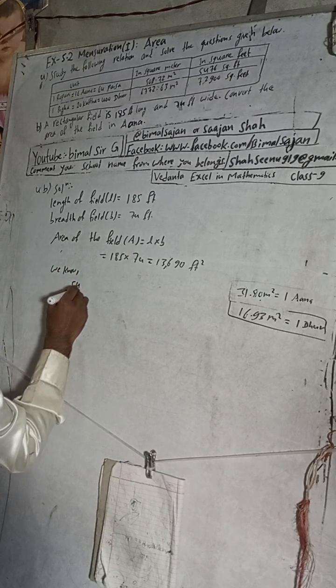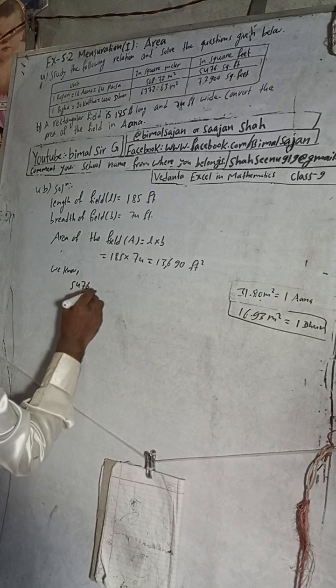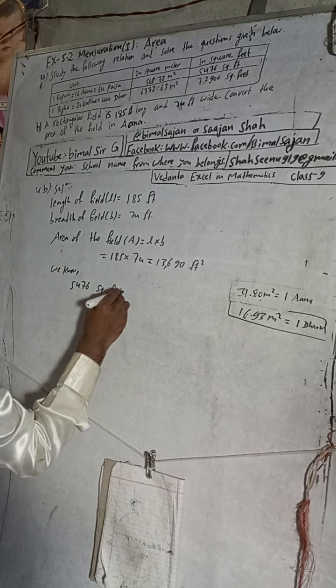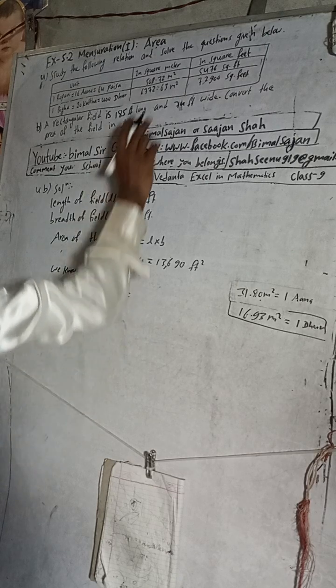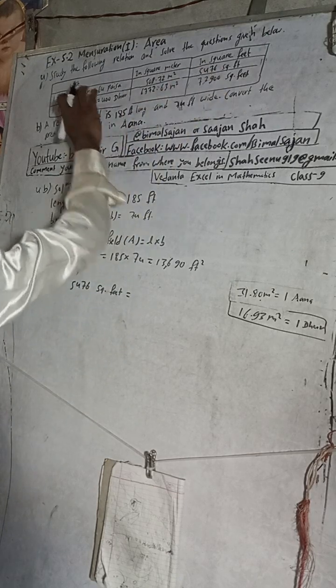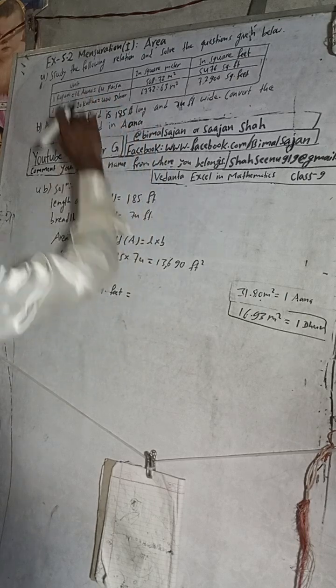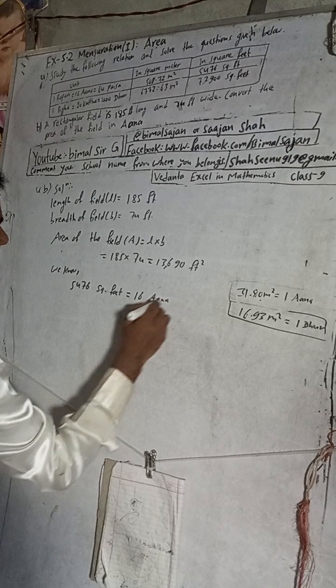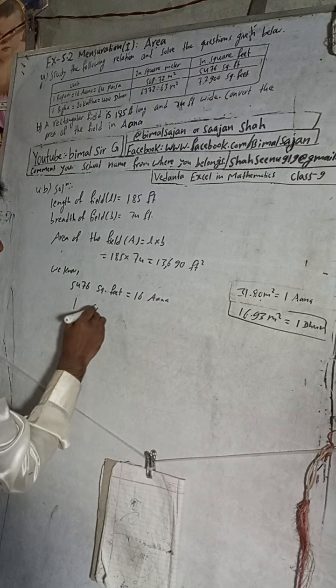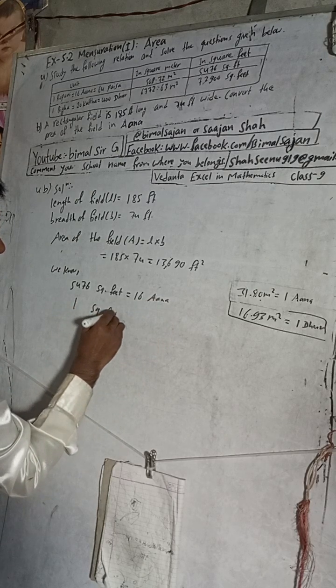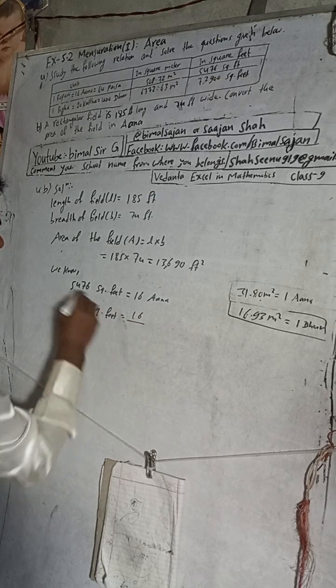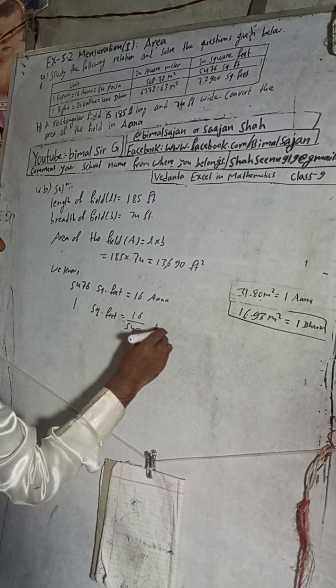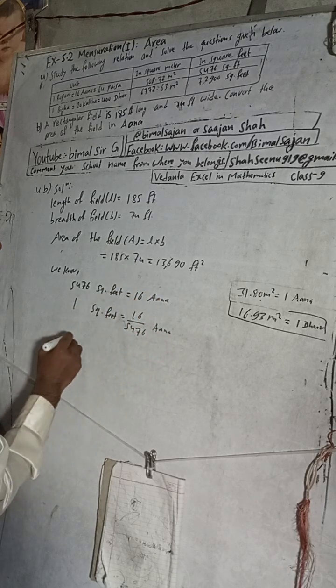5,476 square feet is equal to how much? 16 ana. That means 1 square foot is equal to 16 divided by 5,476 ana.